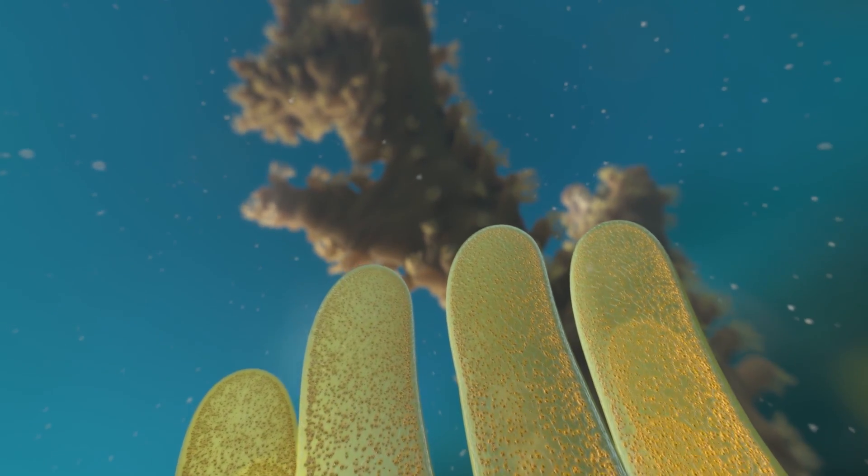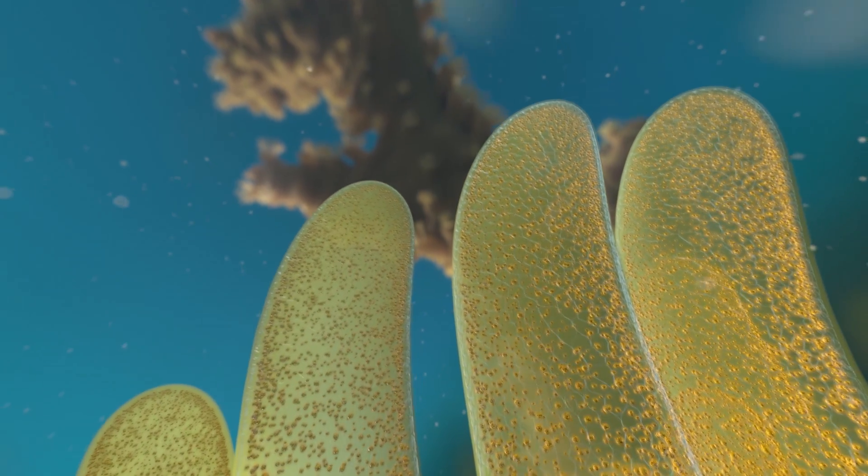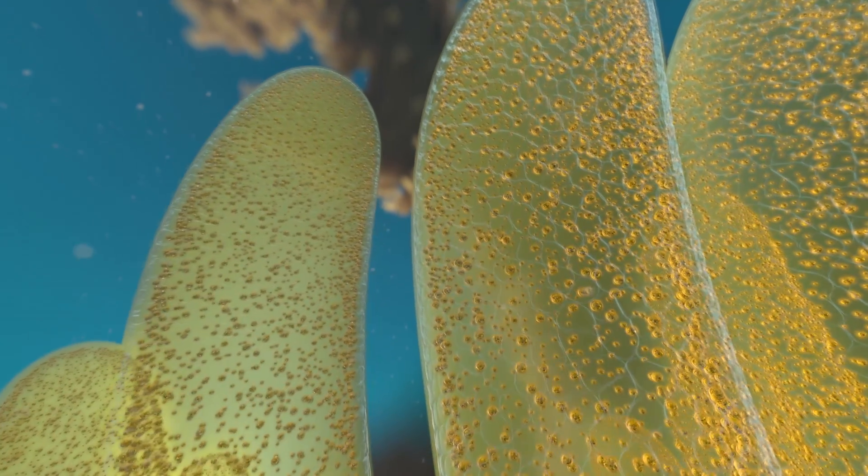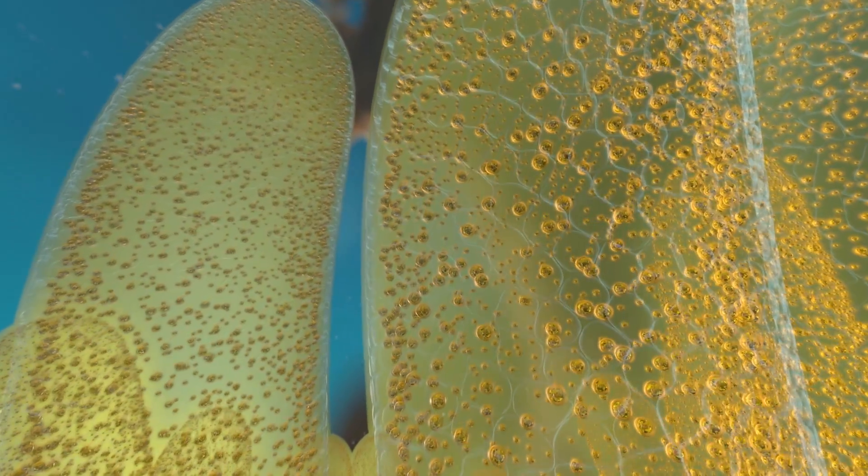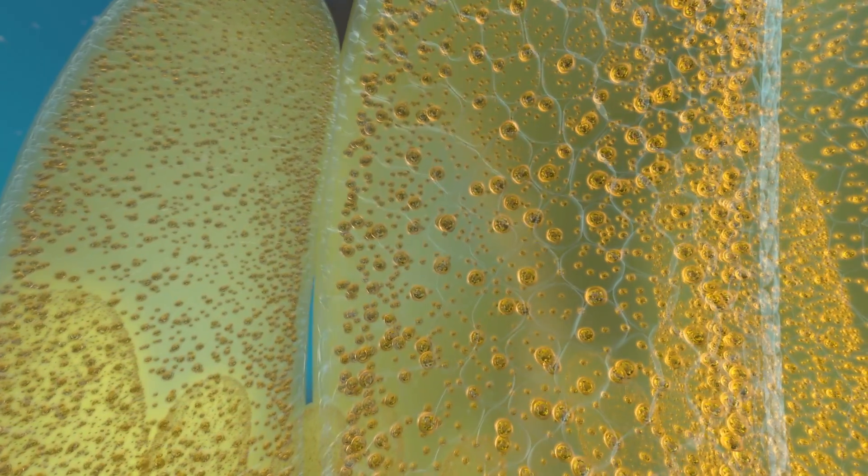The inner layers of the polyp's tissue provide a home to algae called zooxanthellae. These algae give the coral its color. And more importantly, they harness light from the sun through a process known as photosynthesis.